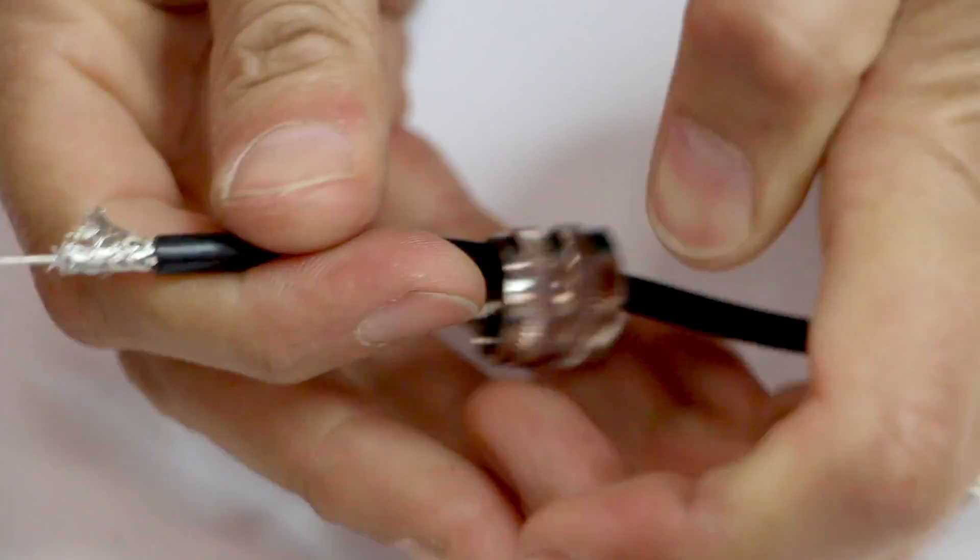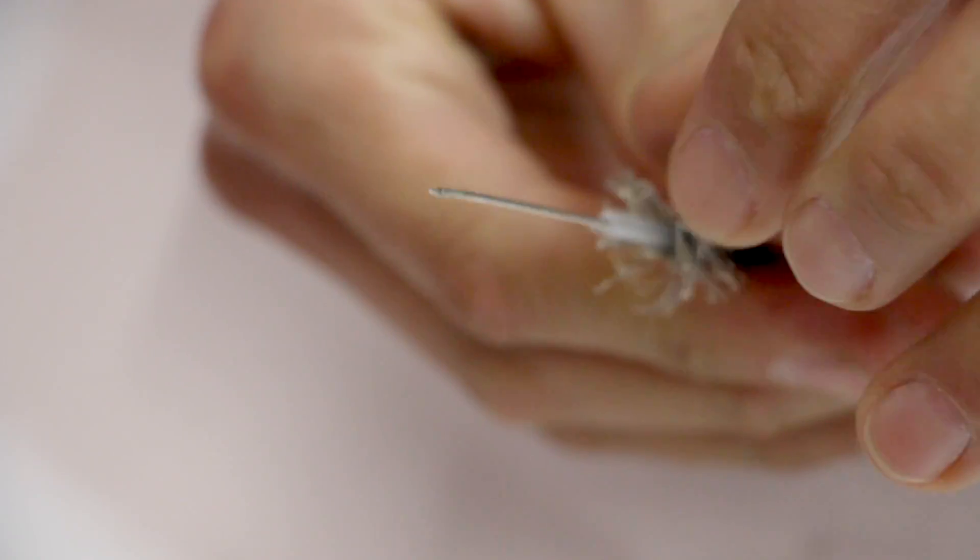Pull back the braided shielding, being careful that no strands are making contact with the inner connector wires.